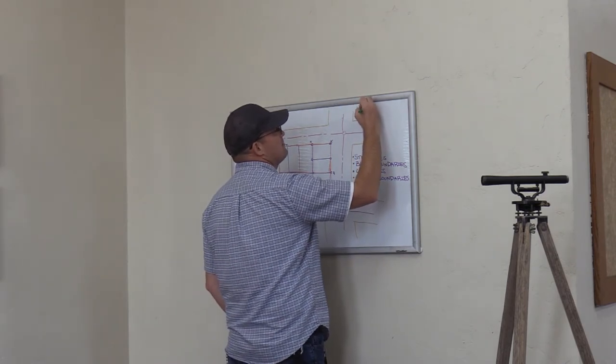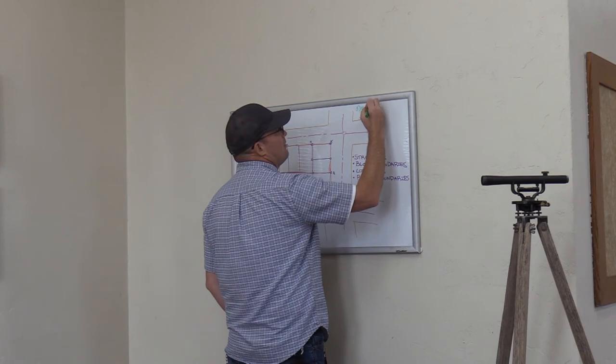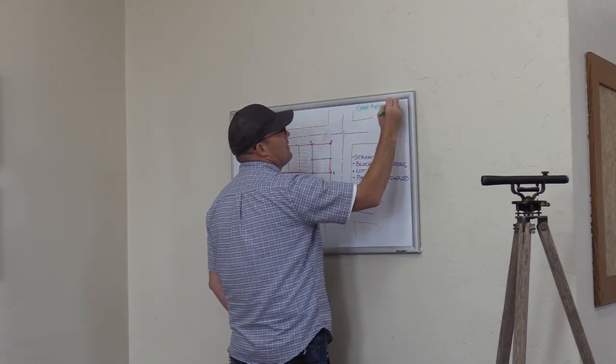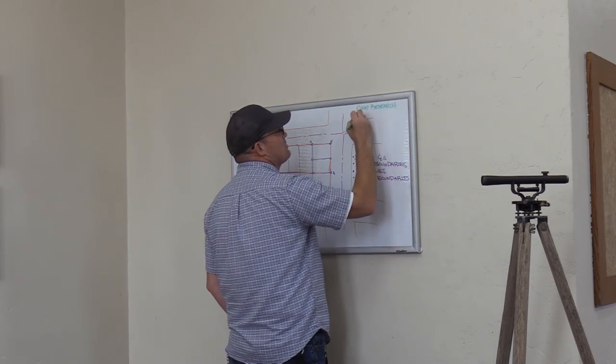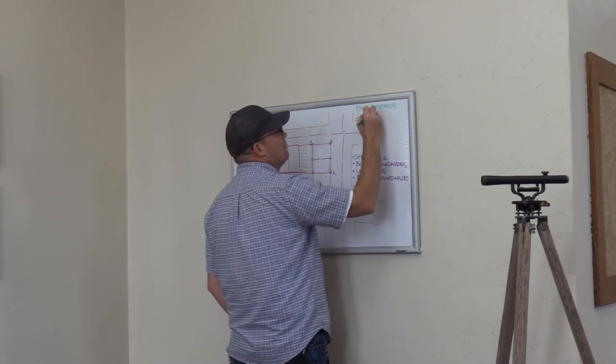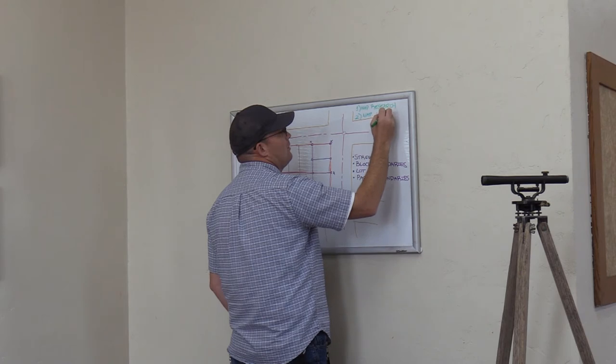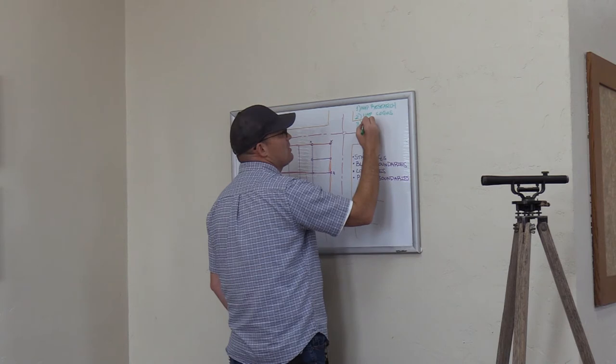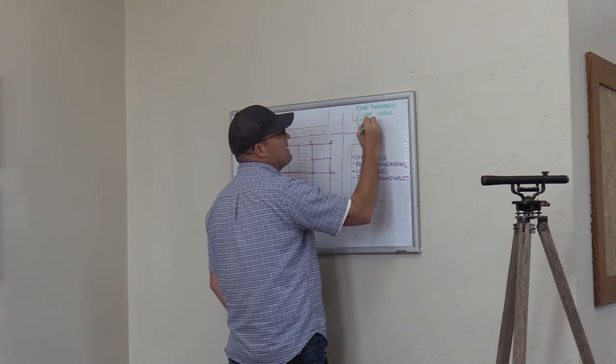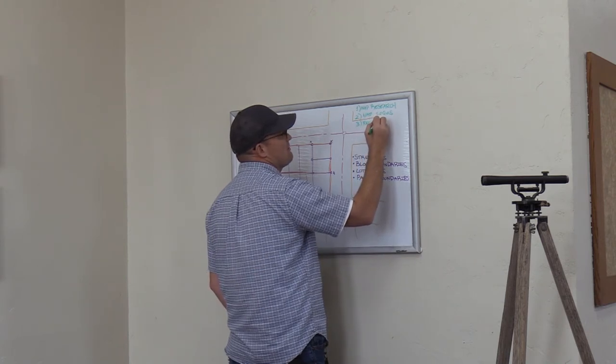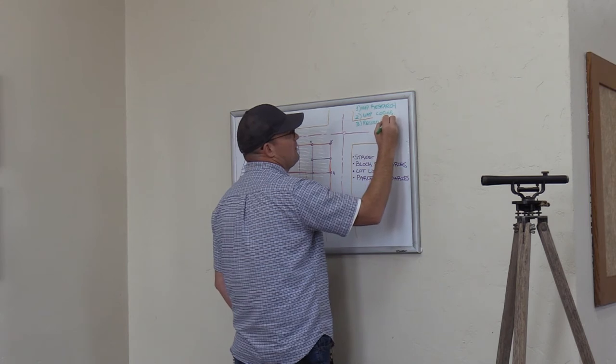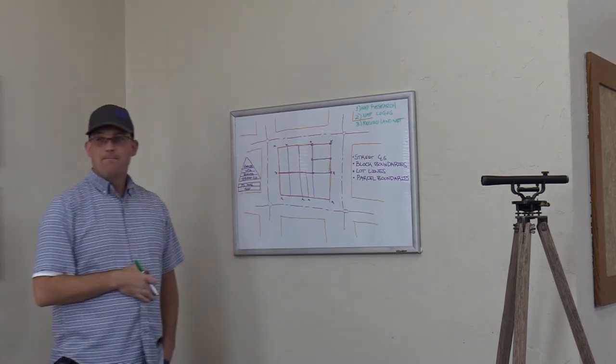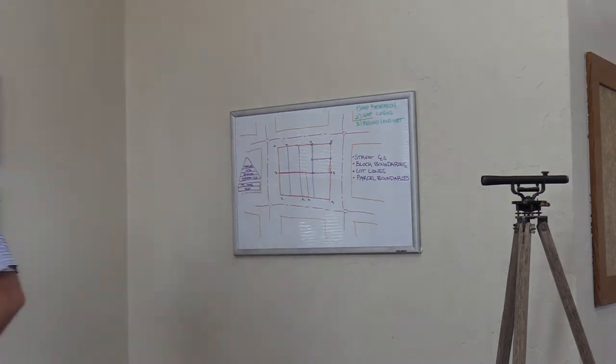So then the very next thing we got to do is map COGOs. And then after we're done with the map COGOs, the next thing we do is we put together what I call a record land net. It's just a search trying. It's a fancy name for a search trying. Record land net. Man, that's a lot of COGO. It is a lot of COGO.